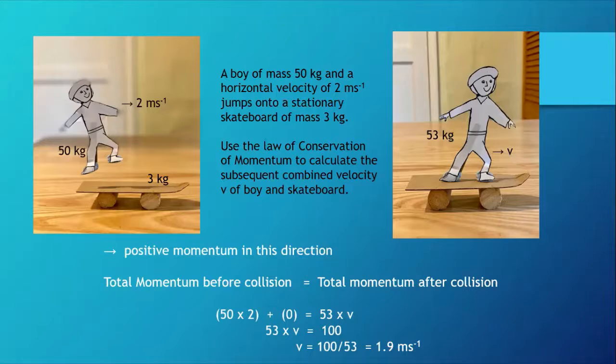I'm applying the law of conservation of momentum: total momentum before equals total momentum after. I've got 50 times 2 plus zero. Why zero? Well, the skateboard isn't moving so it has zero velocity and zero momentum. That equals 53, the combined mass, times v, and we can work out that combined velocity which is about 1.9 meters per second.